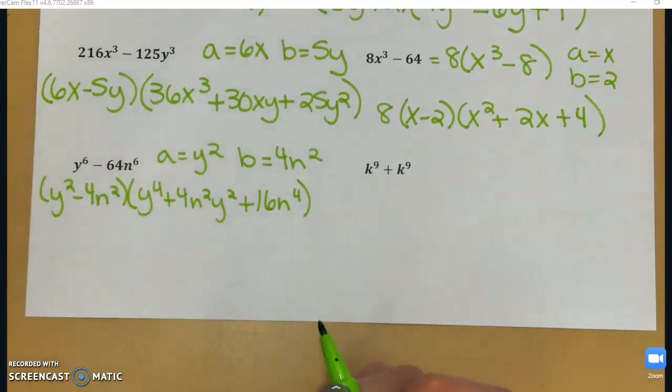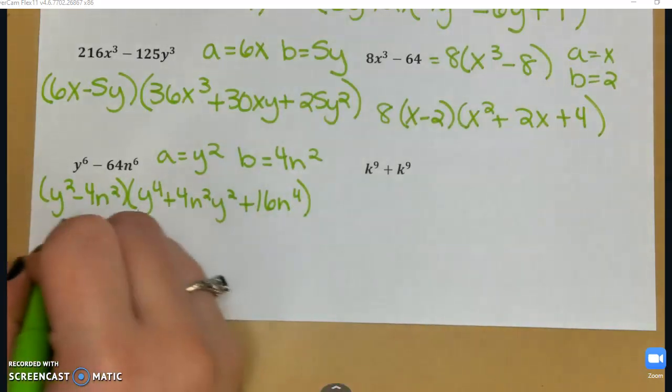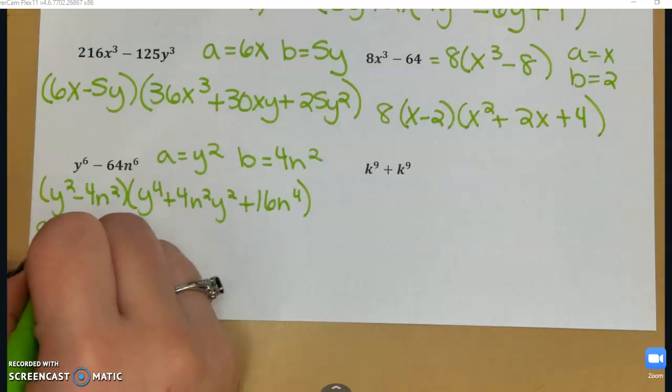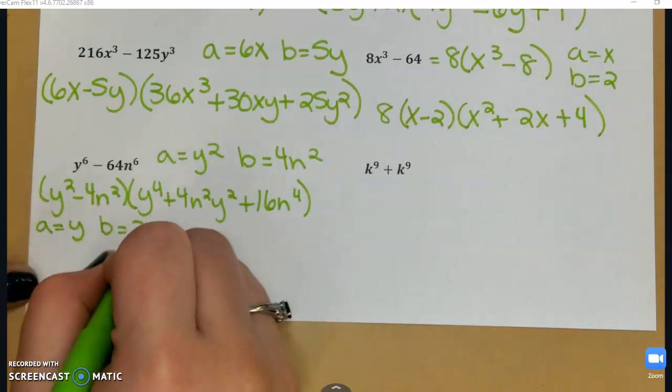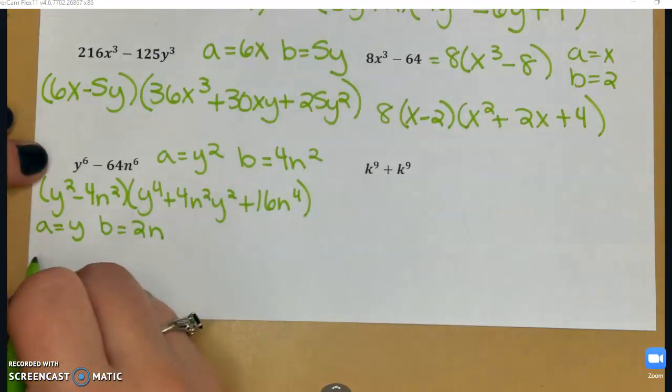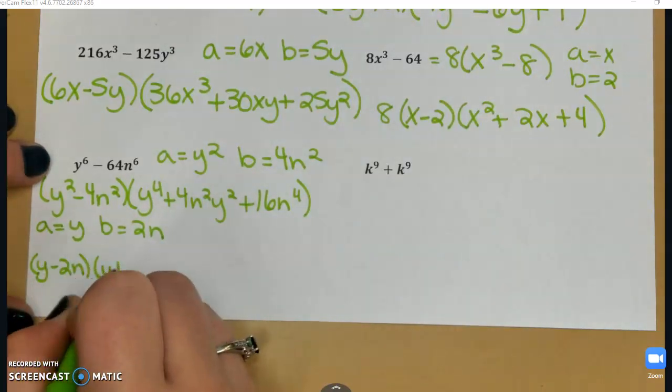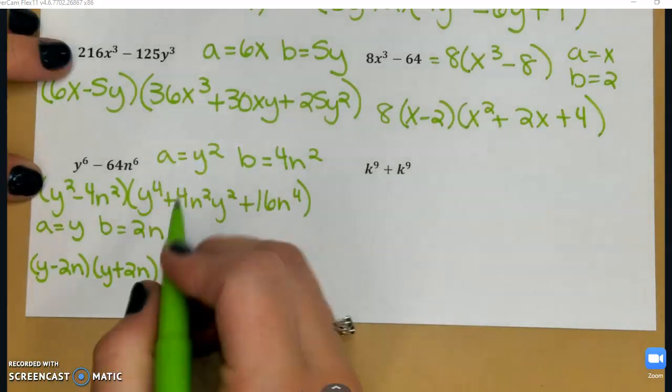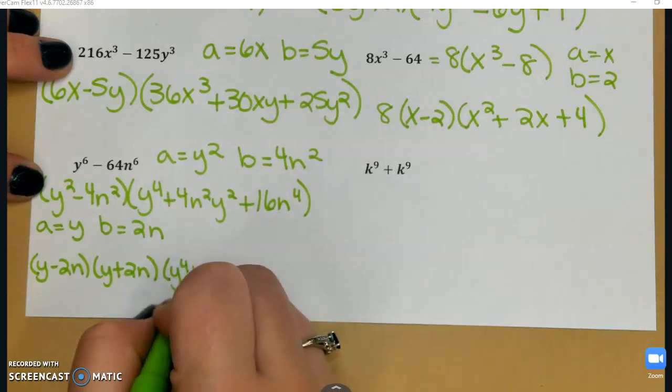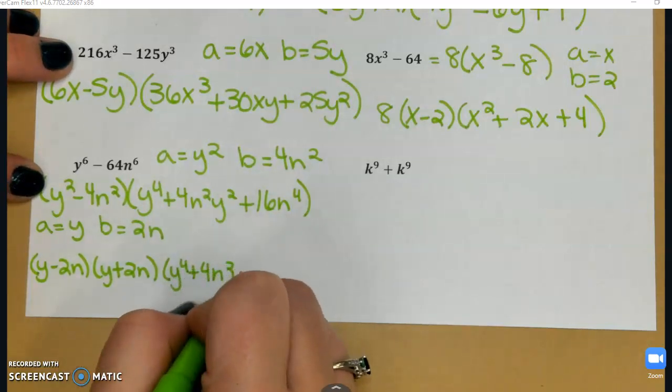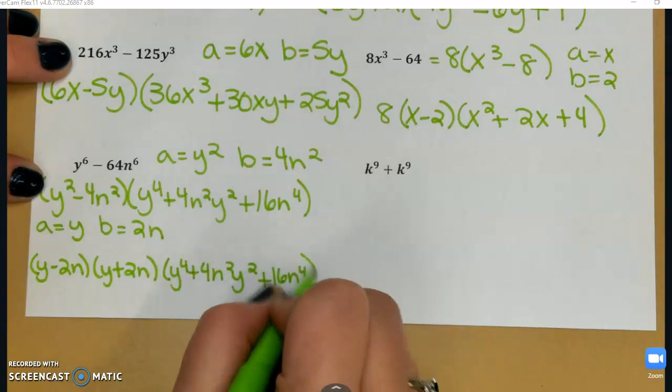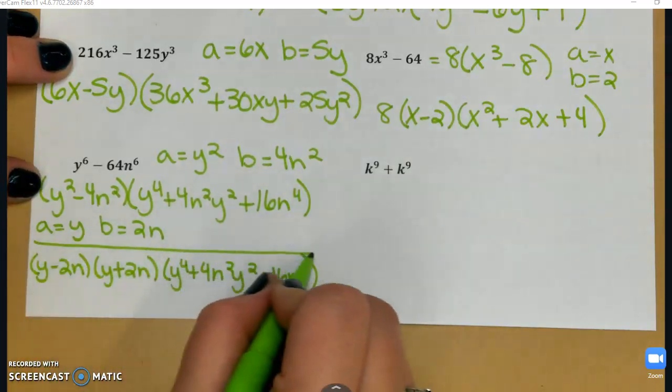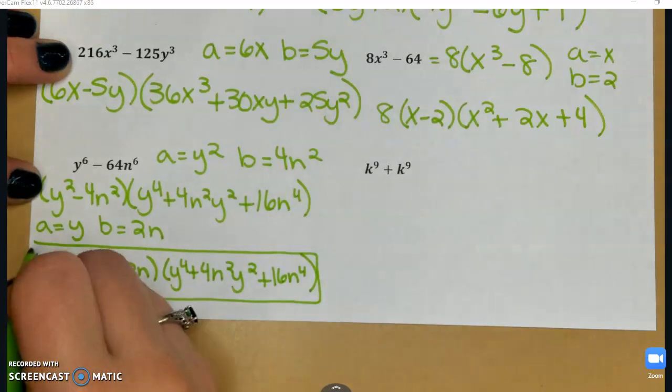Remember, difference of squares is factored out to (a - b)(a + b). So I'm going to quickly identify my new a and b. a is y, b is 2n. So when I factor that first parenthesis, I'm going to get (y - 2n)(y + 2n). So that was me factoring my difference of squares, and then I just bring down that long parenthesis at the end. And so this whole thing is my factored answer.